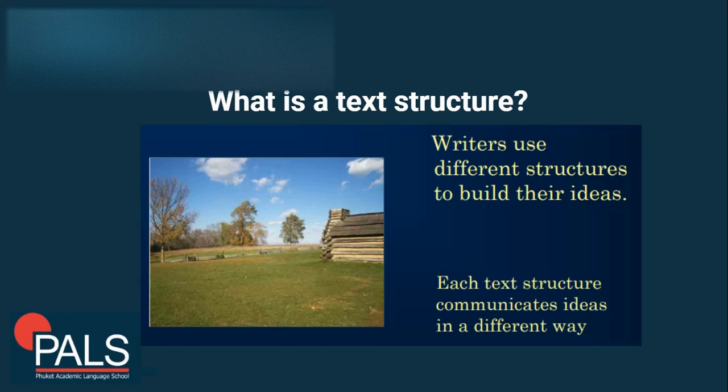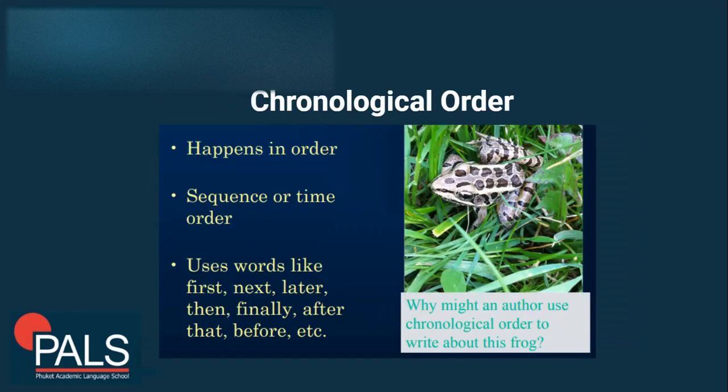For example, you cannot tell a narrative or a story by using compare and contrast. Sometimes you would need to make use of chronological order. Each text structure communicates ideas in a different way — every text structure is unique.